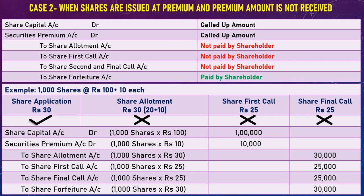Case 2: When shares are issued at premium and the premium amount is not received. Security premium is credited at the time of issue as it is our profit. But when shares are cancelled and the premium amount is not paid by the shareholder, security premium account is debited. So we debit share capital, debit security premium not paid, credit the unpaid installments, and transfer the paid amount to share forfeiture account.